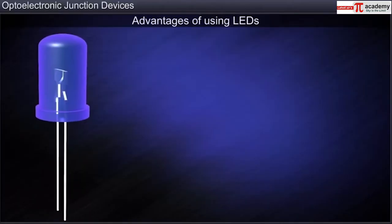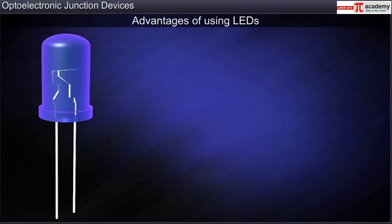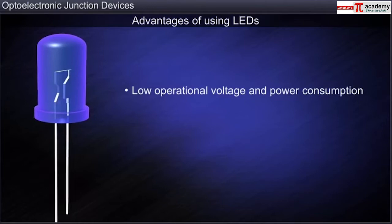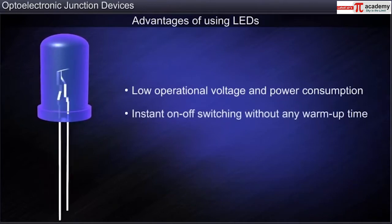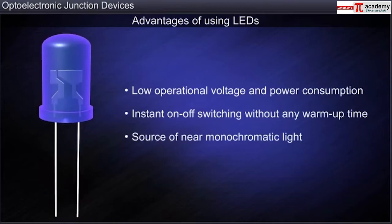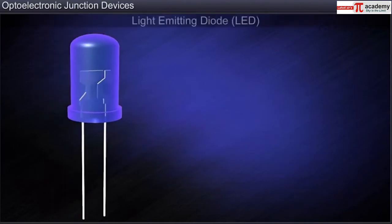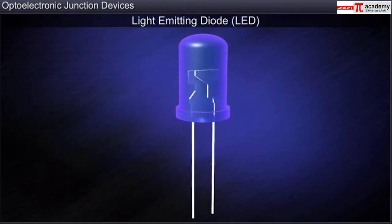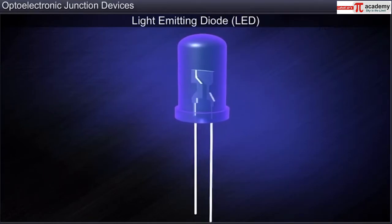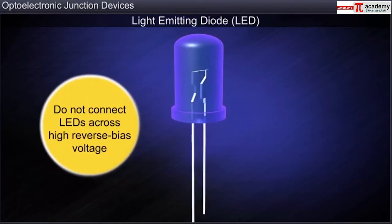LEDs offer several advantages over conventional electrical light sources: low operational voltage and power consumption, instant on-off switching without any warm-up time, source of near monochromatic light, and long life with negligible wear and tear. LEDs have low reverse bias breakdown voltages. Thus, care must be taken that they do not get connected in reverse bias across a high voltage source.